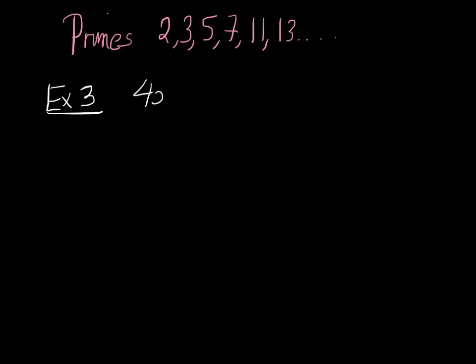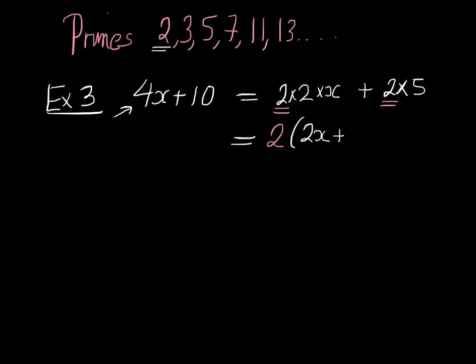Suppose we are factorising 4x plus 10. I want you to break up each of these expressions. Now 4 is not prime, but what primes multiply to 4? Well, 2 times 2. So 4 is 2 times 2, and then you have times x. And 10 breaks up into 2 multiplied by 5. Now we take out a common factor. The only common factor is the 2 here and the 2 here. So take that outside the bracket, and we would have 2 times 2x plus 5. Check it works: 2 times 2x is indeed 4x, and 2 times 5 is indeed 10. So we've done it.